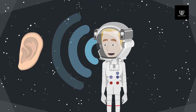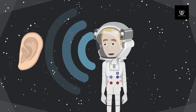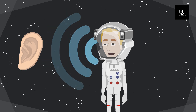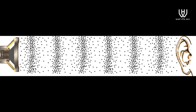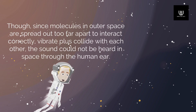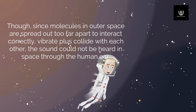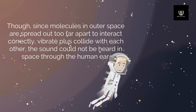While a sound is released from a source, the wave causes molecules in a medium to vibrate and collide with each other, resulting in a sound that the ears can detect. As you can see in the picture, sound is produced from the speaker and the sound waves cause particles to vibrate and oscillate. Since molecules in outer space are spread out too far apart to interact and vibrate with each other, sound cannot be heard in space through the human ear.